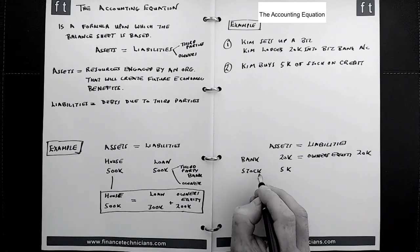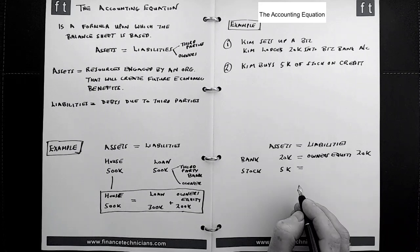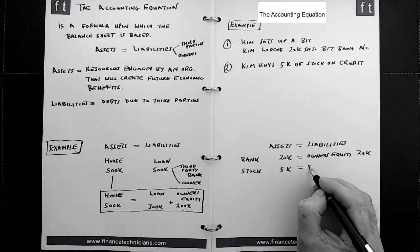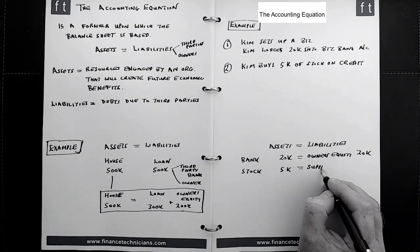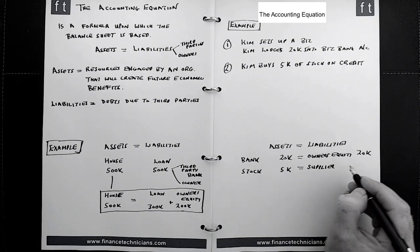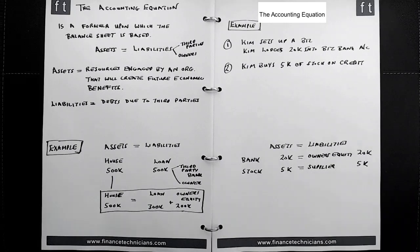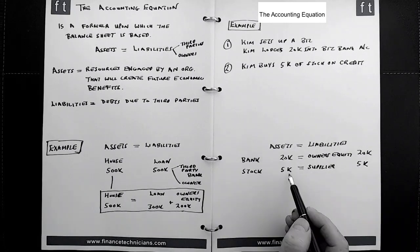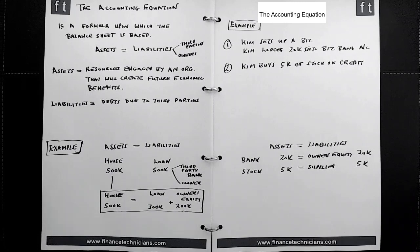That's the asset. So the liability is going to be a third party liability because it's going to be this supplier who is a trade creditor. So the supplier is going to be owed 5k, and you look at it this way.